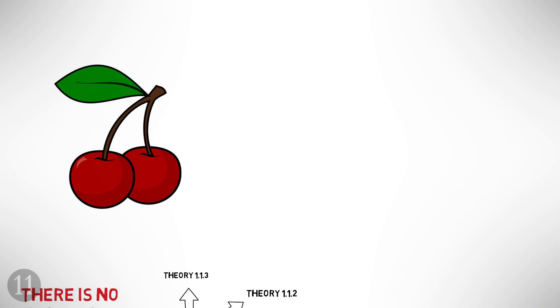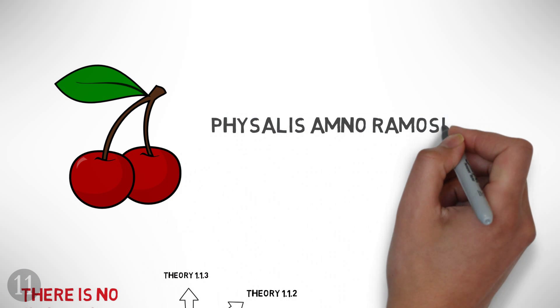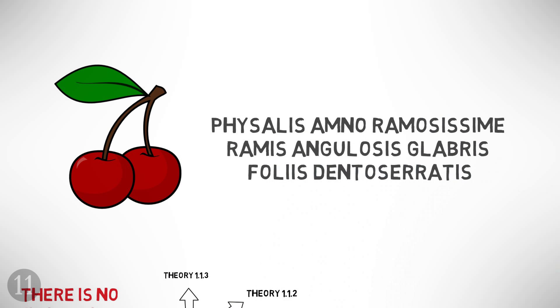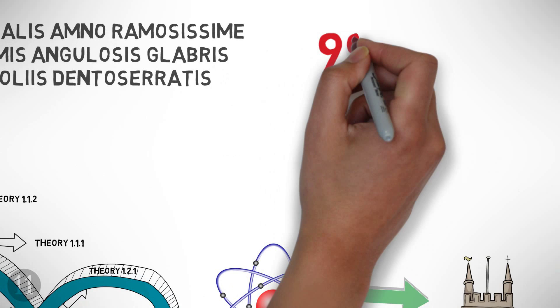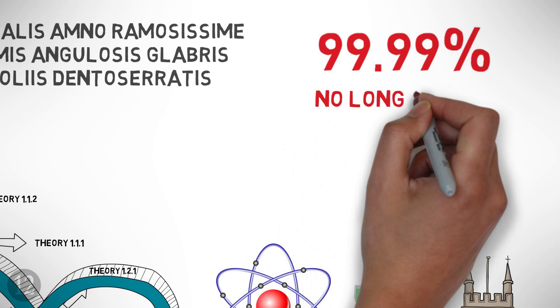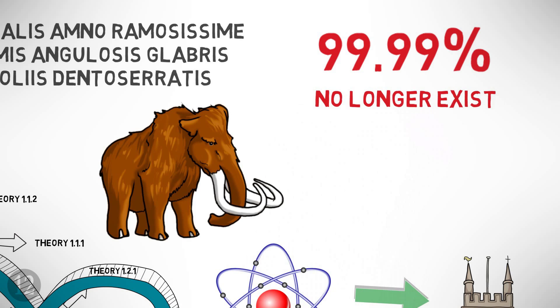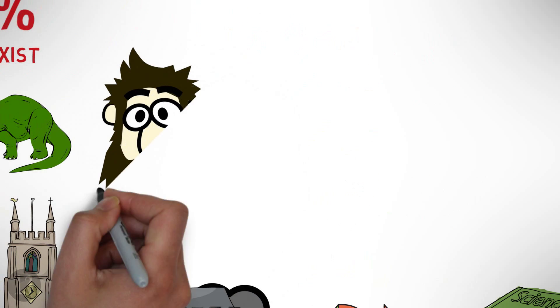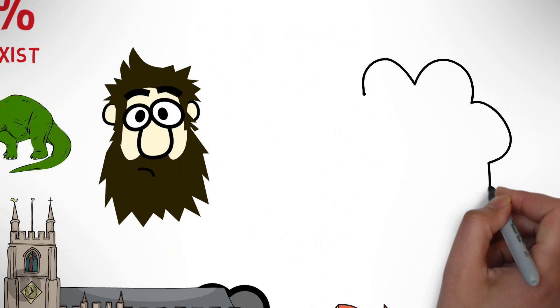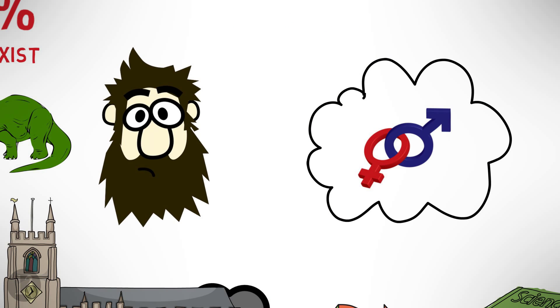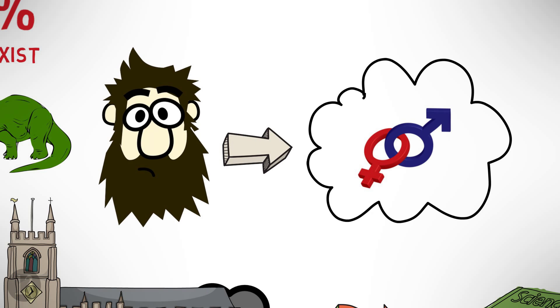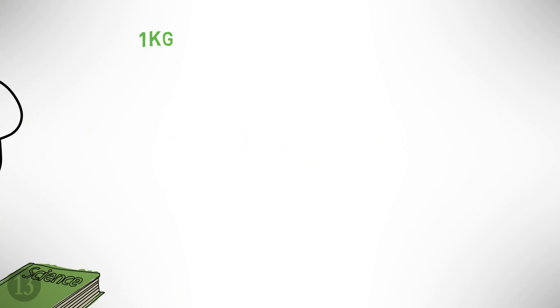Number eleven: the common ground cherry was once called Physalis amno ramosissimi ramus angulosus glabrus follis dentoceratus. I hope I said that right. Number twelve: 99.99% of all species that have ever lived are no longer with us. Number thirteen: want to grow your beard faster? According to Bryson, how fast a man's beard grows is partly a function of how much he thinks about sex, because thinking about sex produces a testosterone surge.